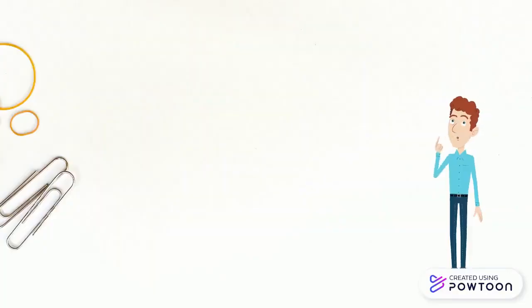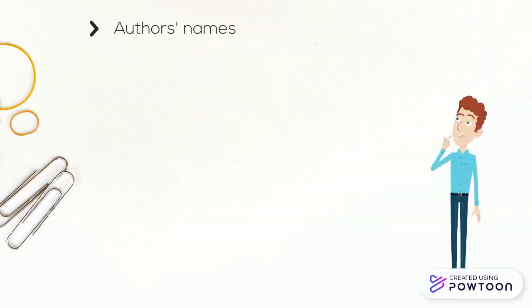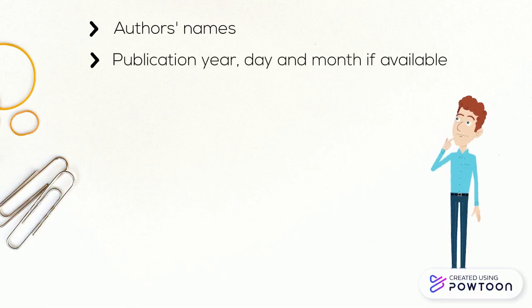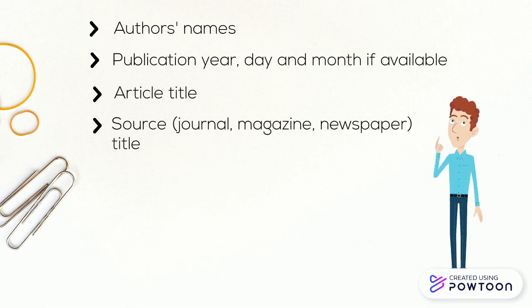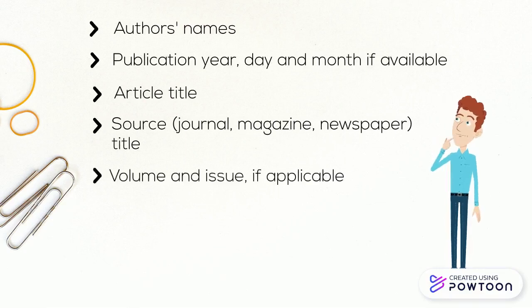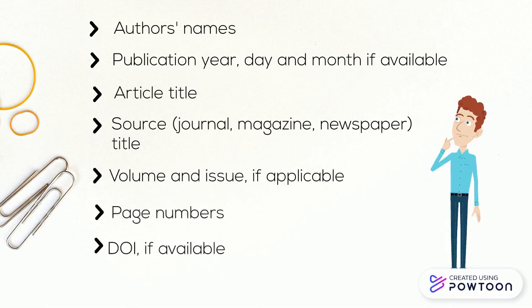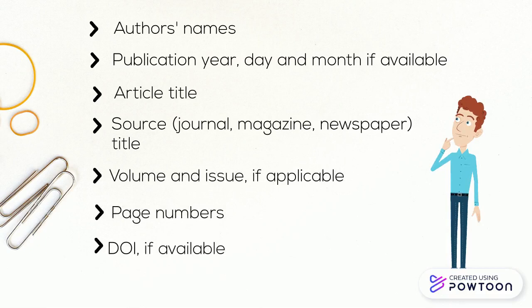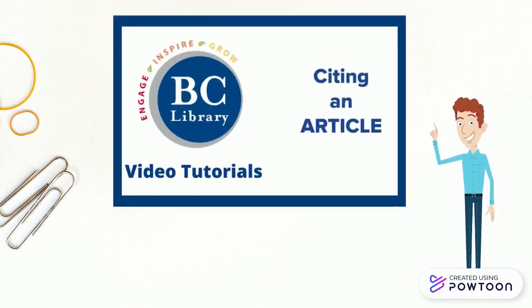First, gather your information. You'll need author's names, publication year, and day and month if available, title of both the article and the source where it was published like the journal or magazine, volume and issue if applicable, page numbers, and a DOI or digital object identifier if available. You can use the video 'Citing an Article' on the BC Library's YouTube channel to learn how to find this information for articles in a commonly used library database.